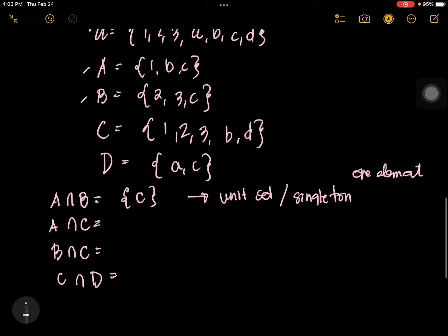Now A intersection C: you have A and C, and their common elements are 1 and B. So the answer is {1, B}. For B intersection C: what is their common? The answer is {2, 3}.